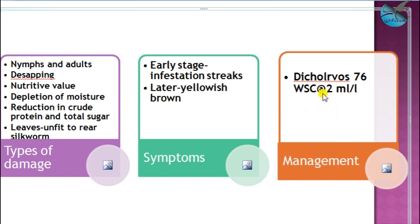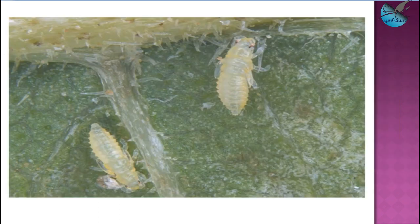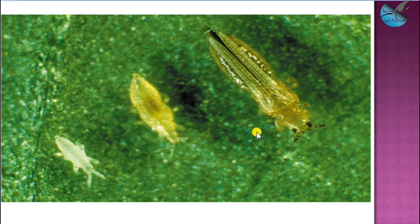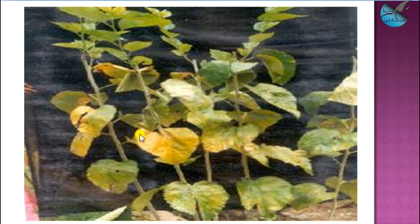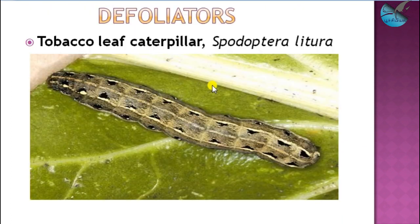For management, blue sticky traps can be used as thrips are attracted to blue color. If population is more, we can go with chemicals. Thrips feed on mulberry leaves and go through immature nymphal stages proceeding to winged adult stage. Being a link between exopterygota and endopterygota, they also have a pupal stage. This is the damage symptom of thrips, and that's all about sucking pests.